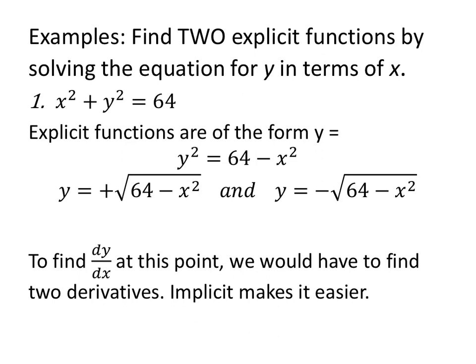Why do we care about implicit differentiation? If we have x squared plus y squared equals 64 and want to find explicit functions, we solve for y by subtracting x squared from both sides. But when we take the square root, we have to consider both the positive and negative square root — giving two functions. To find the derivative, we'd have to find two derivatives, both using the chain rule, whereas implicit differentiation gets us to dy/dx in just a couple of steps.